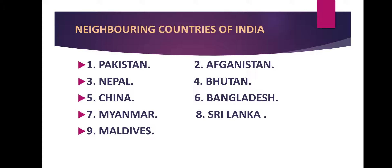You can see a map of India and its adjacent neighboring countries on the screen. In the northwestern part there is Pakistan and Afghanistan. Pakistan shares a long border with India in the northwest, while Afghanistan shares a very short border with India. These are the two countries sharing a border with India in the northwestern part.